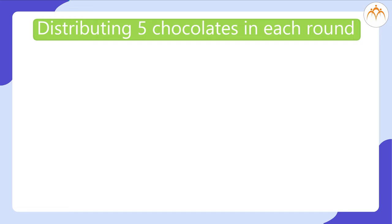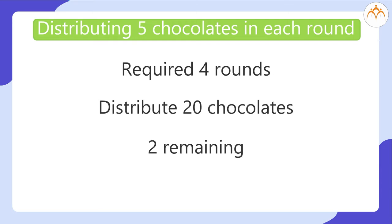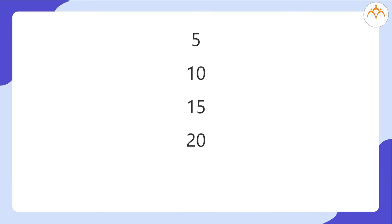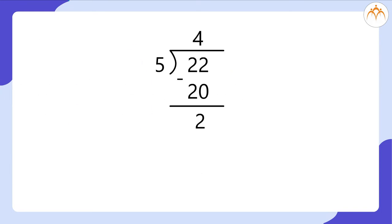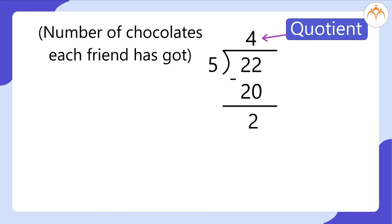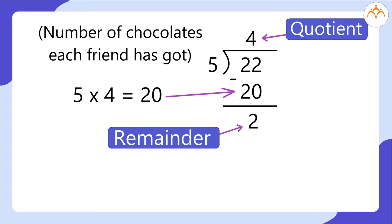As we are distributing 5 chocolates in each round and required 4 such rounds to distribute 20 chocolates with 2 remaining, we look at the table of 5 such that we get 5 fours are 20, which is less than 22. We write 4 as the quotient — the number of chocolates each friend got. Then we subtract 5 multiplied by 4 equal to 20 from 22 to get 2 as the remainder. So instead of subtracting 5 repeatedly 4 times, it is easier to subtract 20 from 22 to get quotient as 4 and remainder as 2.